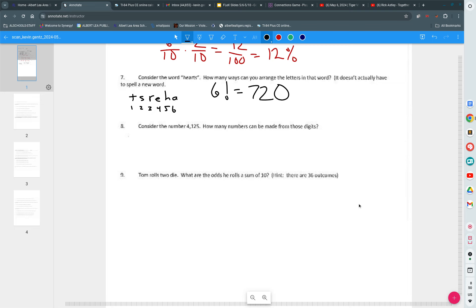Consider the number 4,125. How many numbers can be made from those digits? Assuming that we want a four-digit number. So you have four factorial. So it's four times three times two times one. So four times three is 12 times two, 24 times one is 24.